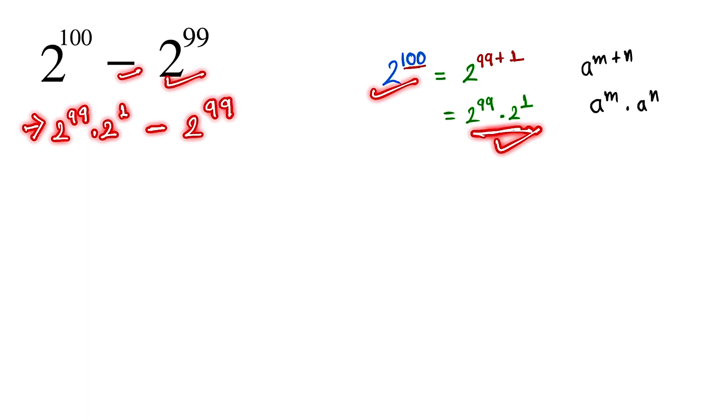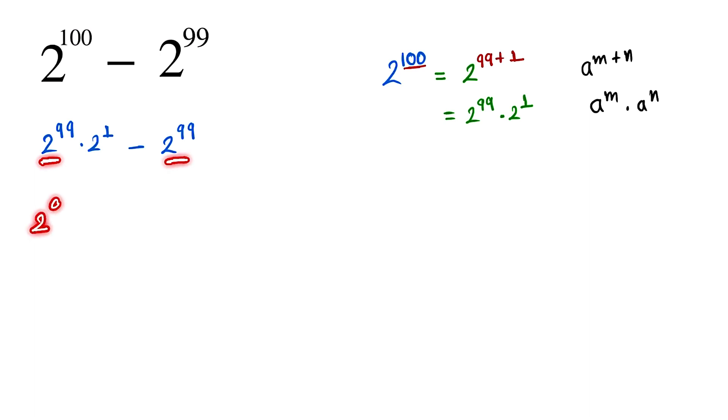Now we take 2 to the power 99 as the common factor. We can write: 2 to the power 99 times (2 minus 1). Since 2 minus 1 equals 1, this equals 2 to the power 99.